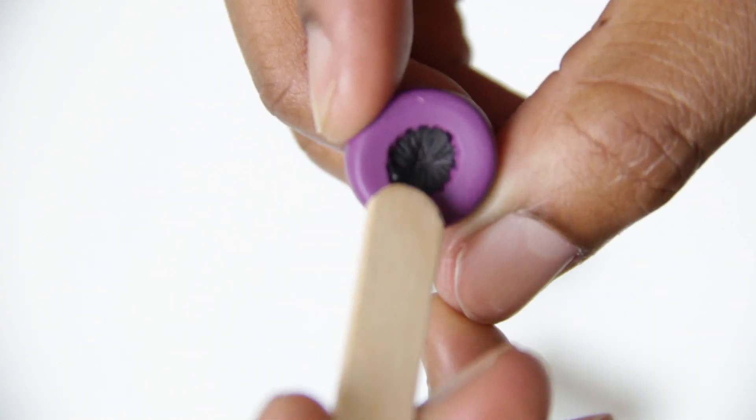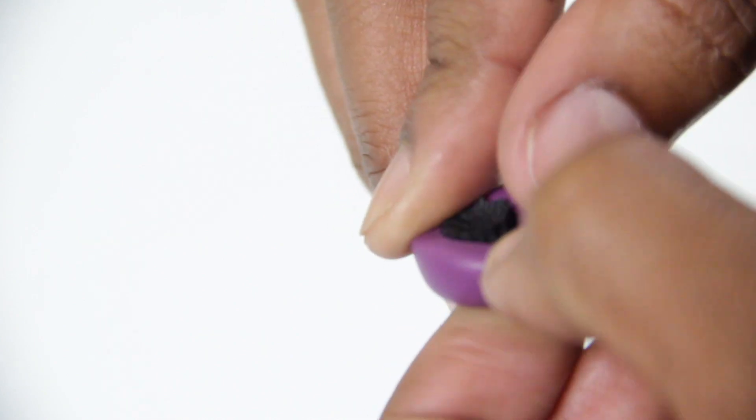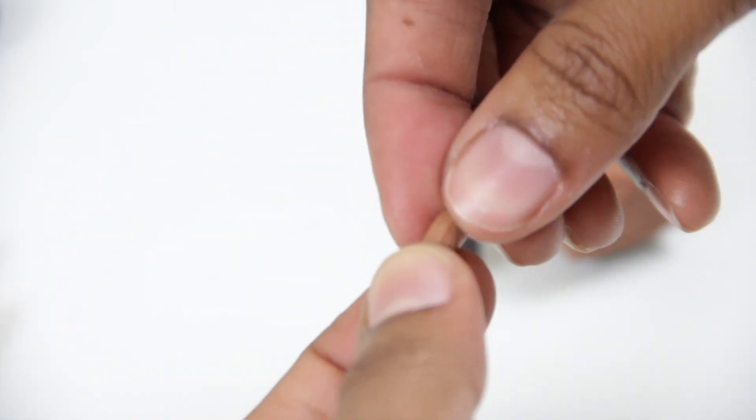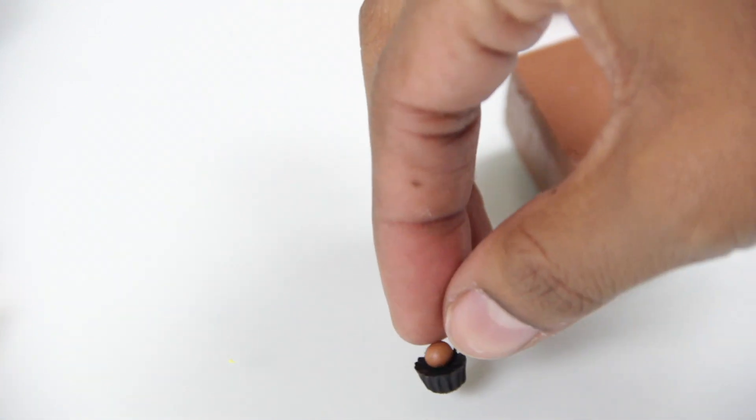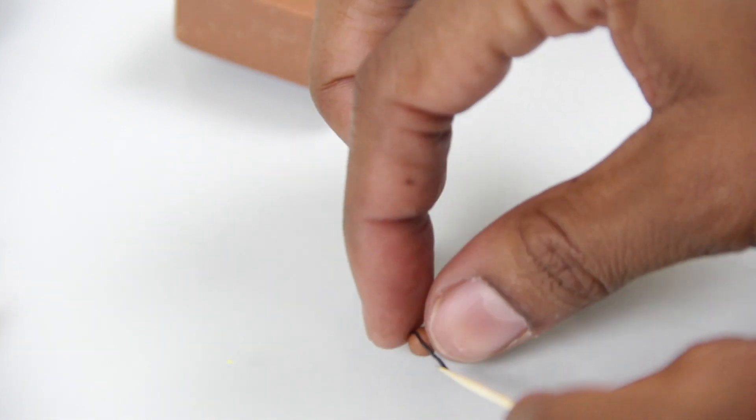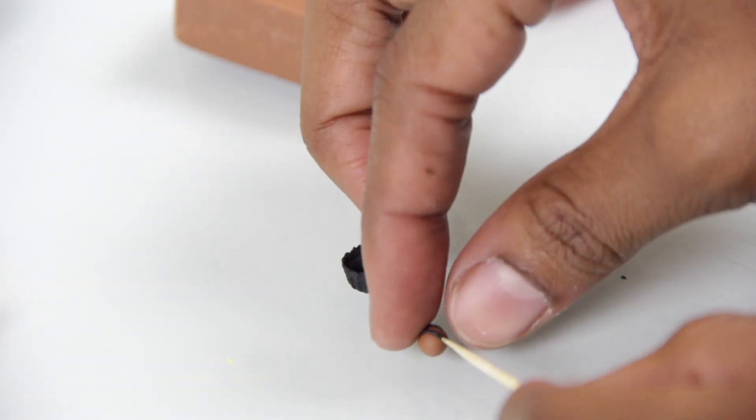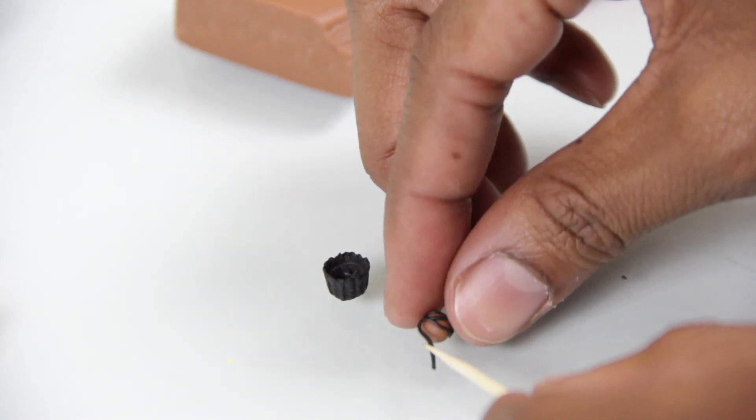And now to the little chocolate truffles. So I'm using this little tiny cupcake wrapper and I put black clay in it and kind of pressed it in deep with a popsicle stick or you can use a lollipop stick or a toothpick to create those edges and details and to give depth in the center so that you can sit a little truffle in there just like this one.